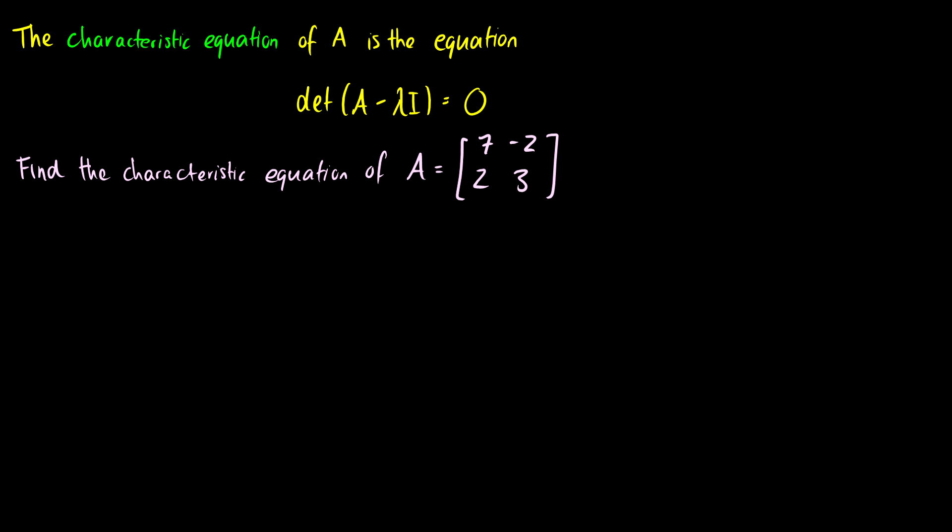In this video, we're going to talk about characteristic equations. It turns out that determinants and eigenvalues are related. The characteristic equation is how we relate these — specifically, the determinant of A minus lambda I equals 0. That's going to be our equation.